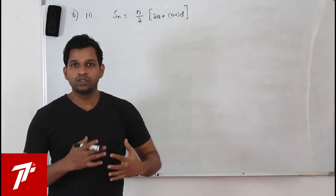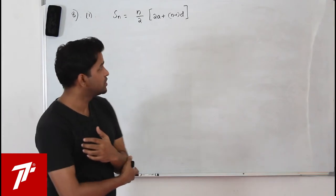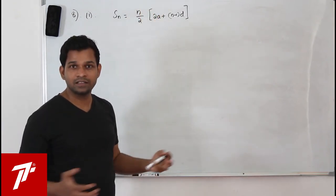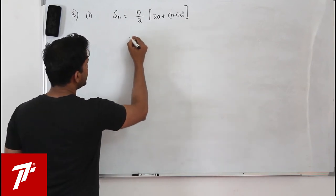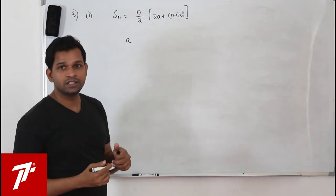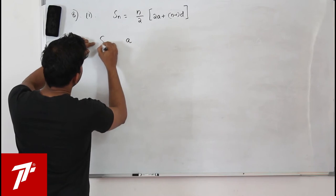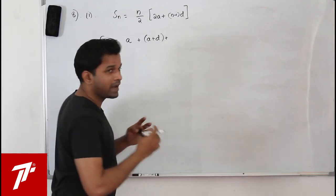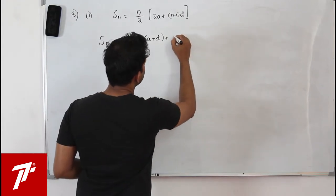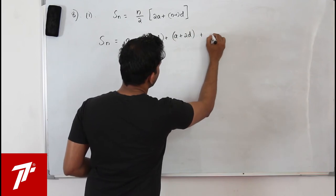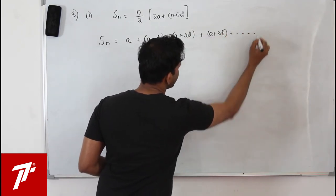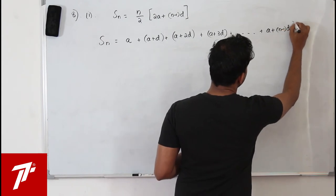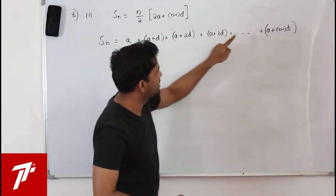Write out the sum Sn = A + (A+D) + (A+2D) + ... + (A+(n-1)D). Then write the same series in reverse: Sn = (A+(n-1)D) + (A+(n-2)D) + ... + A. This sets up the classic proof.